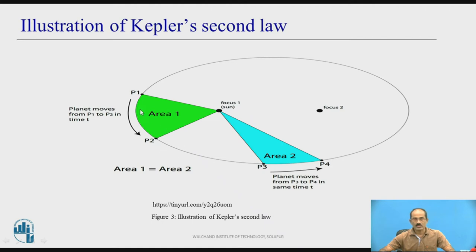There are two areas covered here: area 1 and area 2. The time it takes to travel from P1 to P2 is T. And to cover area 2, the time it takes to travel from P3 to P4 is also T. When these two areas are equal, that is area 1 and area 2 are equal for a given time T.